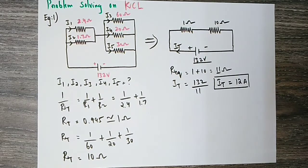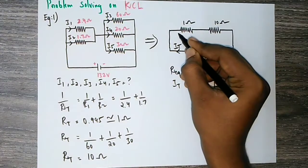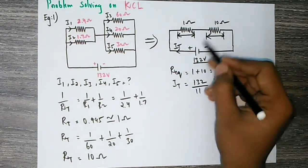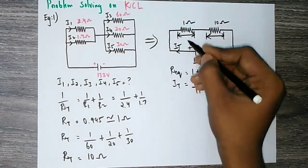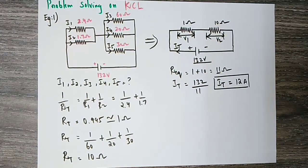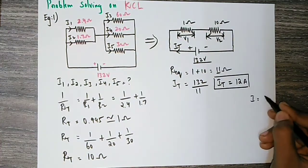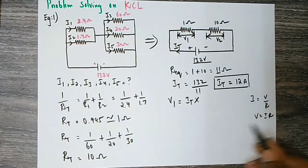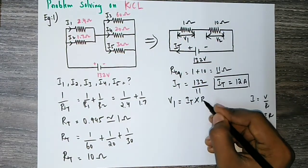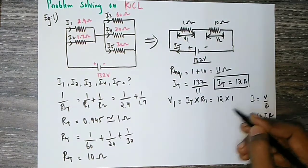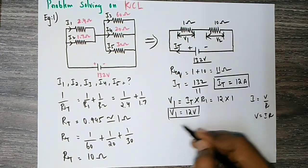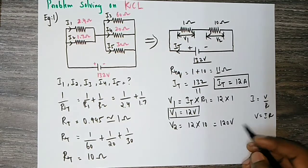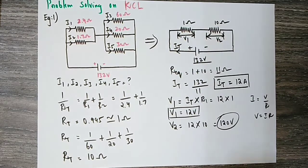Now we have the total voltage but there are different voltages across different sections: V1 and V2. Using V equals I times R, V1 equals I_total times R1 — so 12 times 1 equals 12 volts. And V2 equals I_total times R2 — so 12 times 10 equals 120 volts.